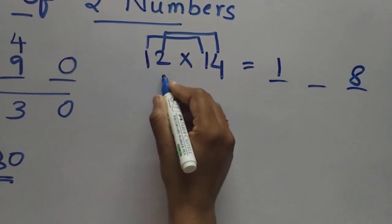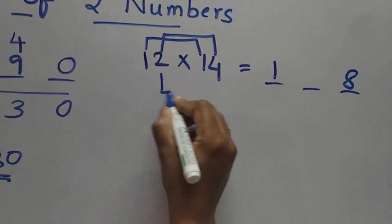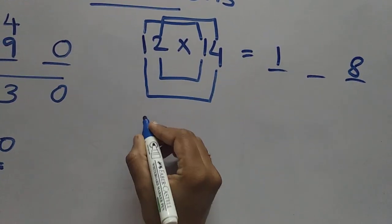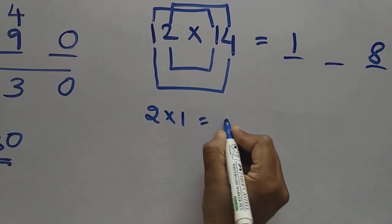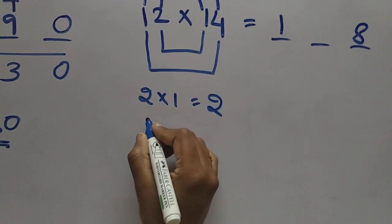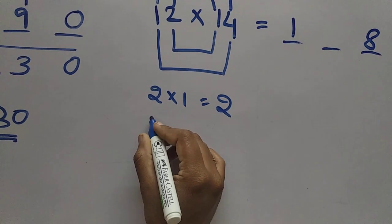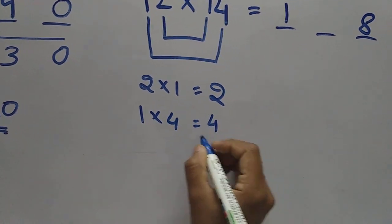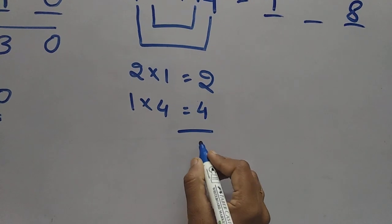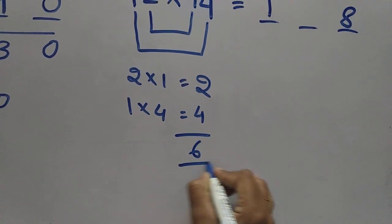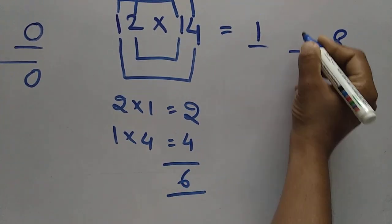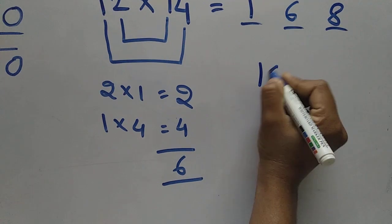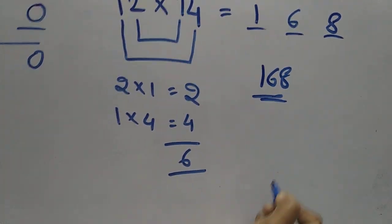After that we can multiply 2 with 1 and 1 with 4. 2 into 1 is 2, and 1 into 4 is 4. After that we can add these 2 — this is 6, and write 6 here. 12 into 14 — 168 is the answer.